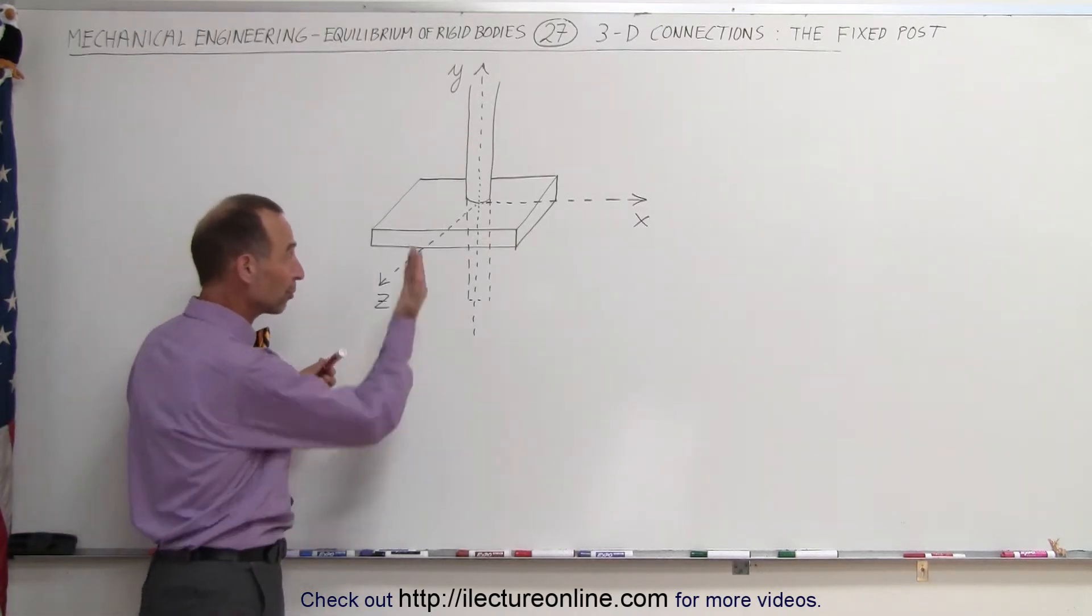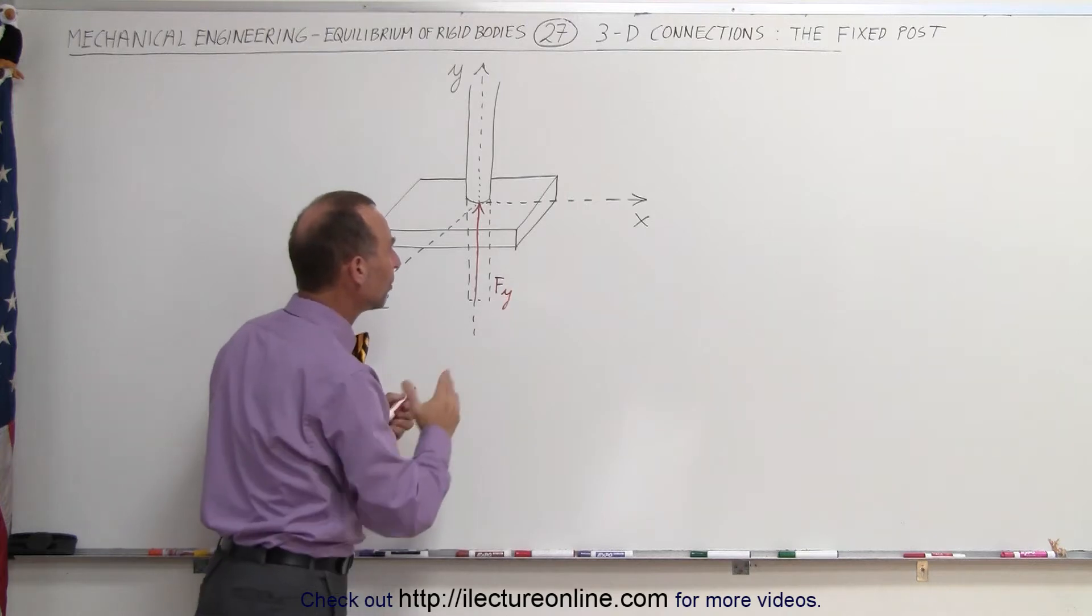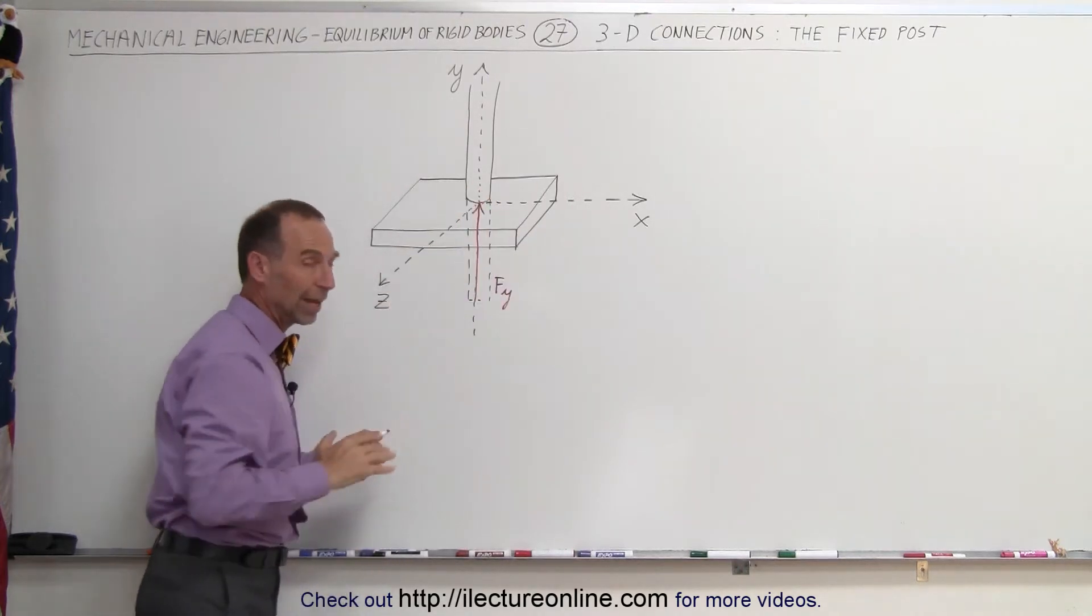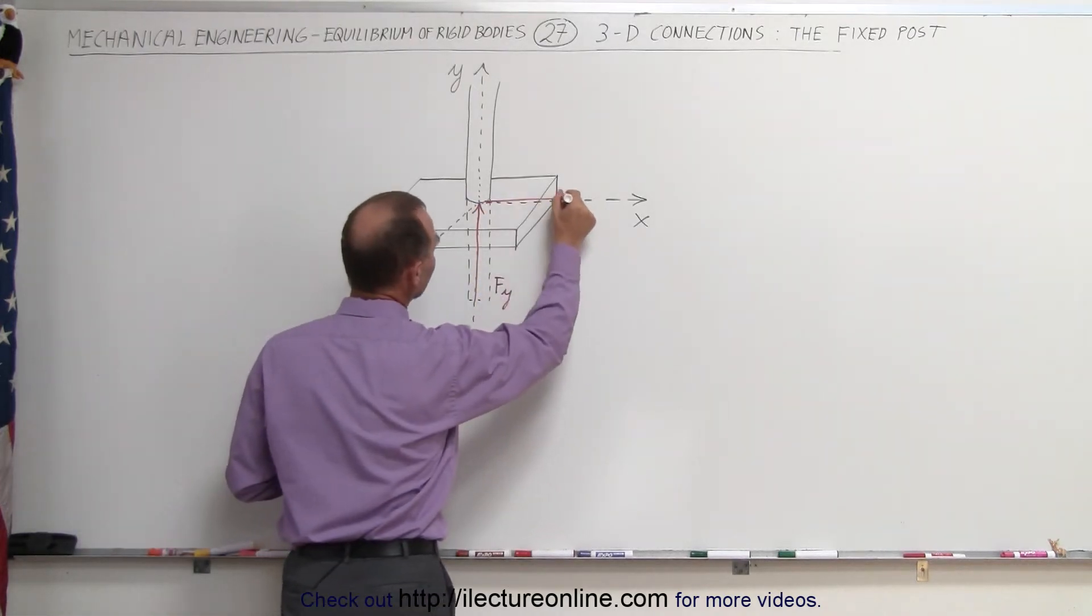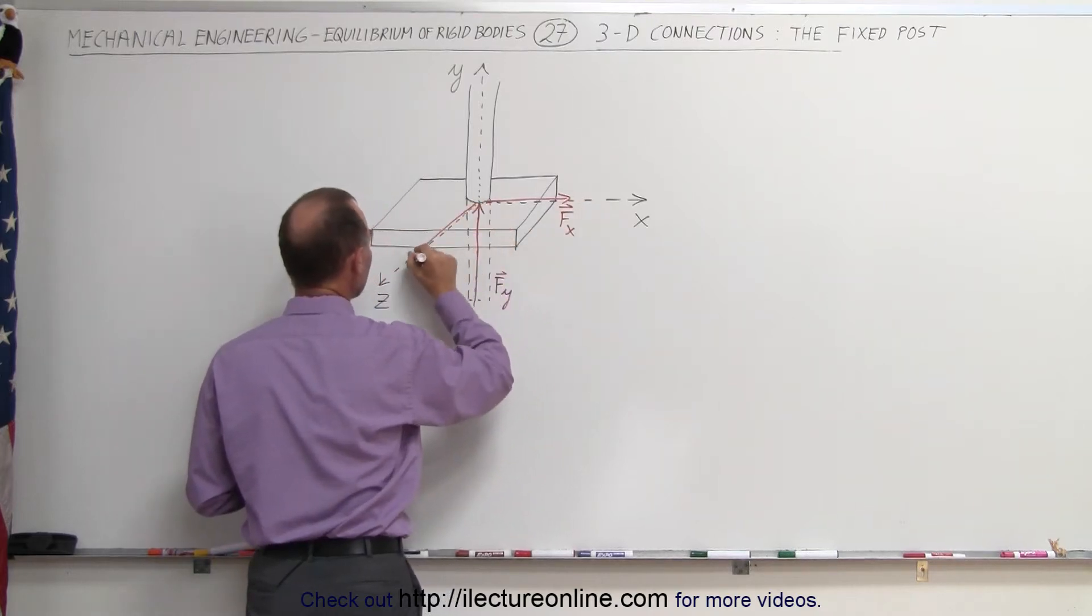First of all, we have a force pushing back from the bottom, upholding the weight. So first we have a force in the y direction. But since the post cannot move laterally in the x direction or in the z direction, we have two additional forces there. So there's a triad of forces, one in the x direction and one in the z direction.